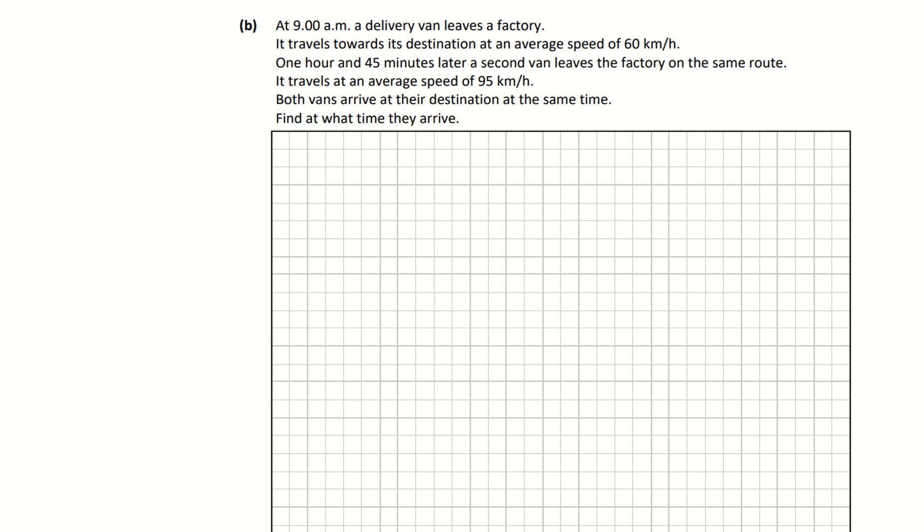They both travel the same distance basically. They're both going from a warehouse, the factory, to their destination. So they're both going the same distance. I have van A, so I'm going to go my 9 a.m. van. And I'm also going to do out my 9 plus 145 van. So I just have two scenarios going on here. They're both traveling the same distance. And let's give that distance a value. I'm going to give it the value of x. So they're both traveling x kilometers.